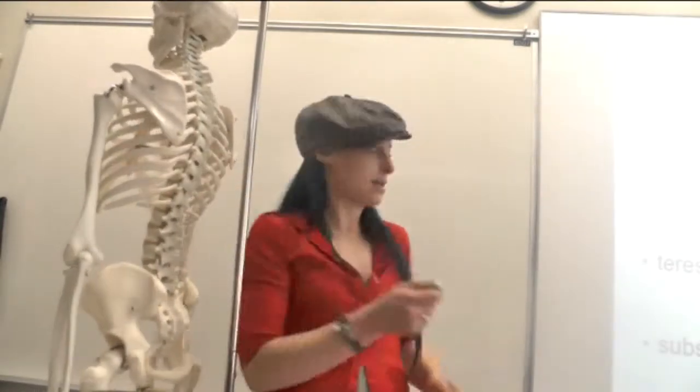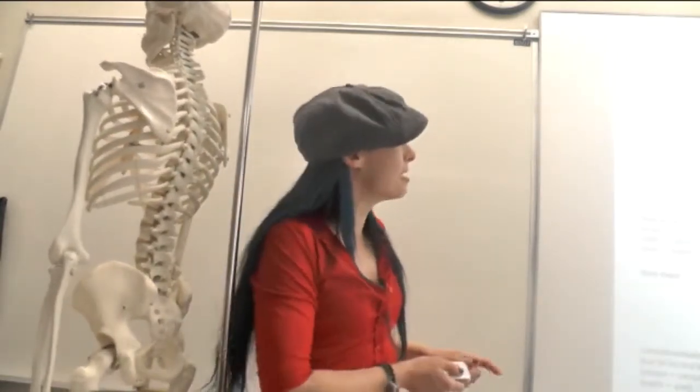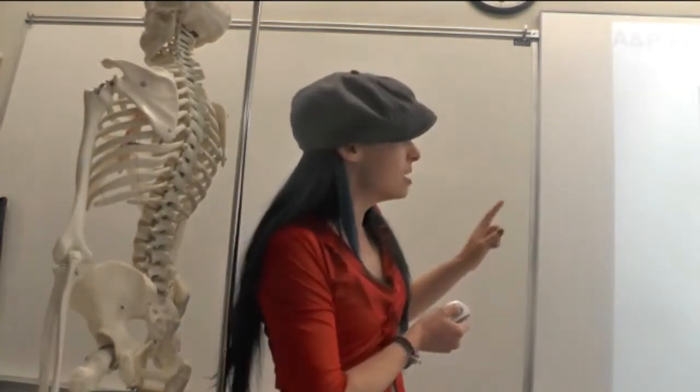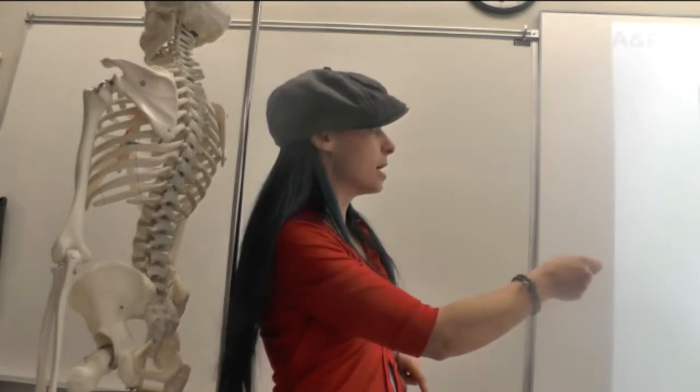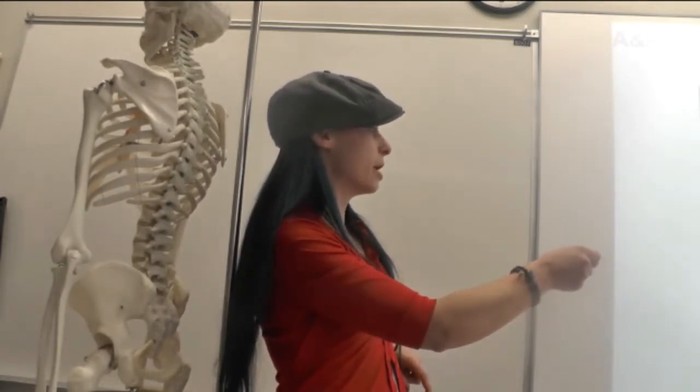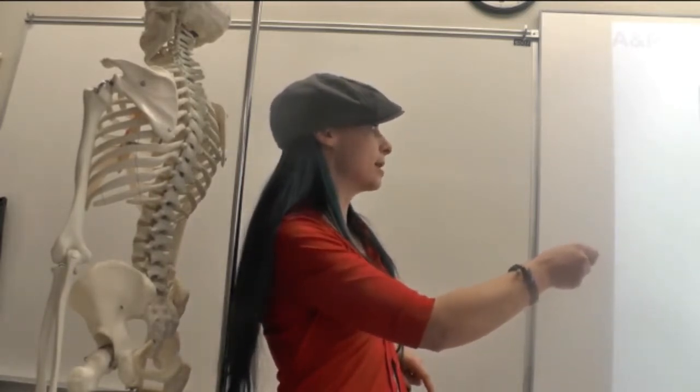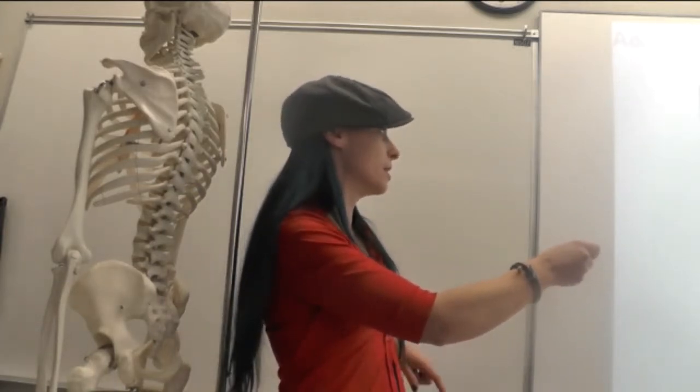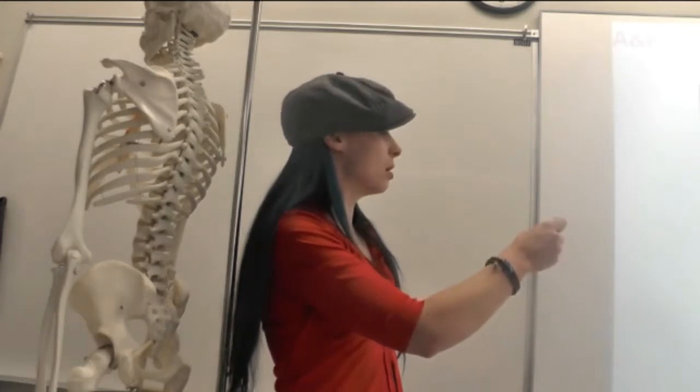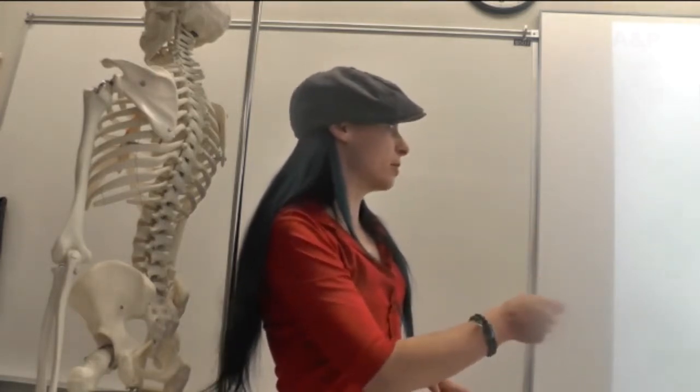Teres minor is easier to see on a picture. I'm not going to be able to really point it out on this skeleton. Teres minor is the one that goes here, kind of from this posterior superior aspect of the humerus to this angle of your scapula, the lateral angle of your scapula. So that's another one of the rotator cuff.